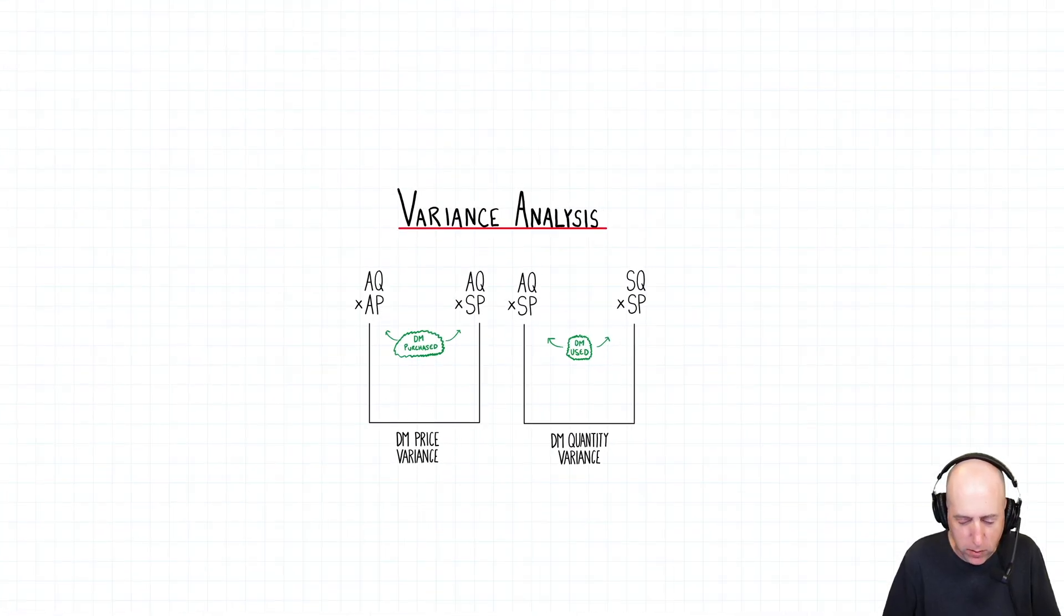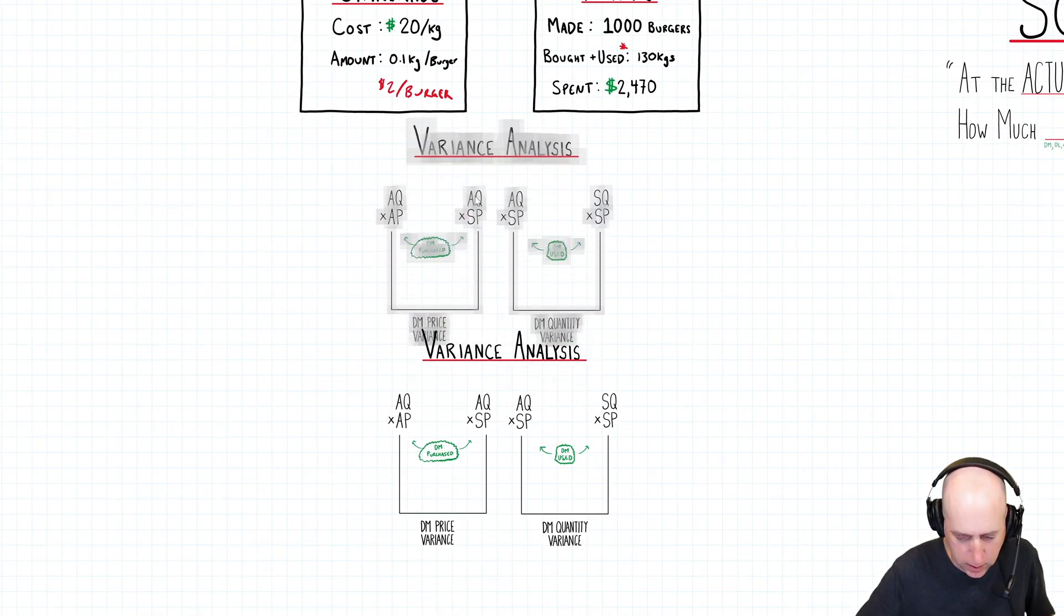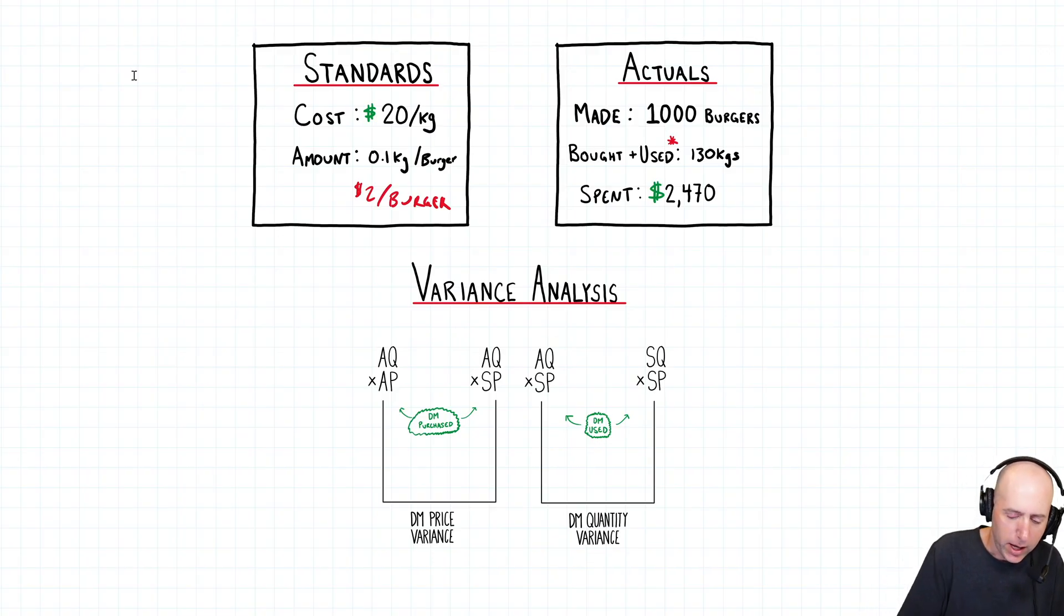So here's how we're going to do variance analysis. I'm going to actually bring this up to be closer to my standards here. Let's see if I can move that up. There we go. And we can have the standards and actuals on the same page. So AQAP. AQ stands for actual quantity. AQAP, AP for actual price. AQSP, actual quantity, standard price. And SQSP, standard quantity, standard price. And as we compare these amounts, we can get some insight into, did Bill blow the budget because he's paying too much for beef? Or did Bill blow the budget because he's either using too much beef or spoiled the beef? Why did he blow the budget? That's what variance analysis helps us to determine. Because there's no doubt, he blew the budget by four hundred seventy dollars.